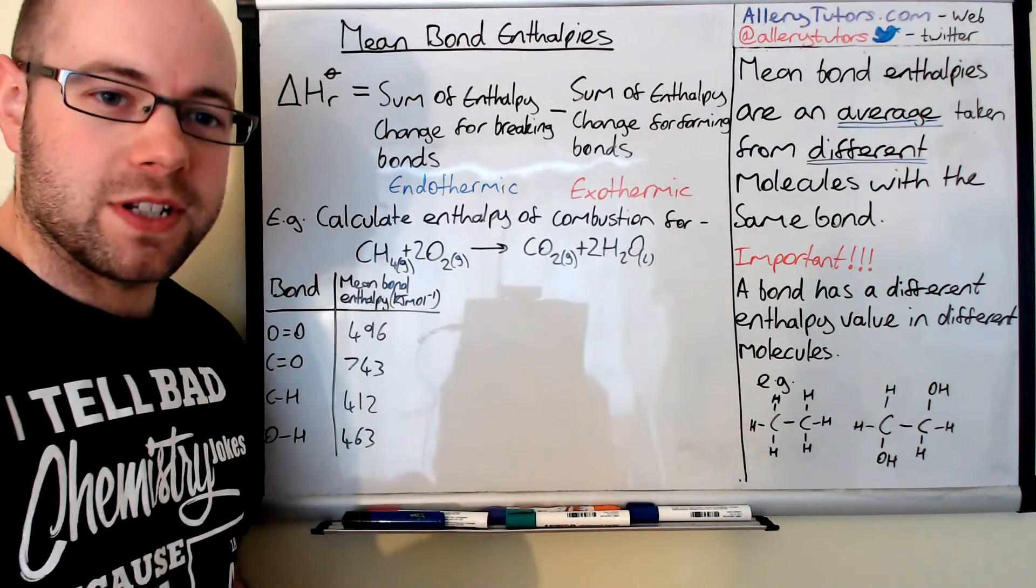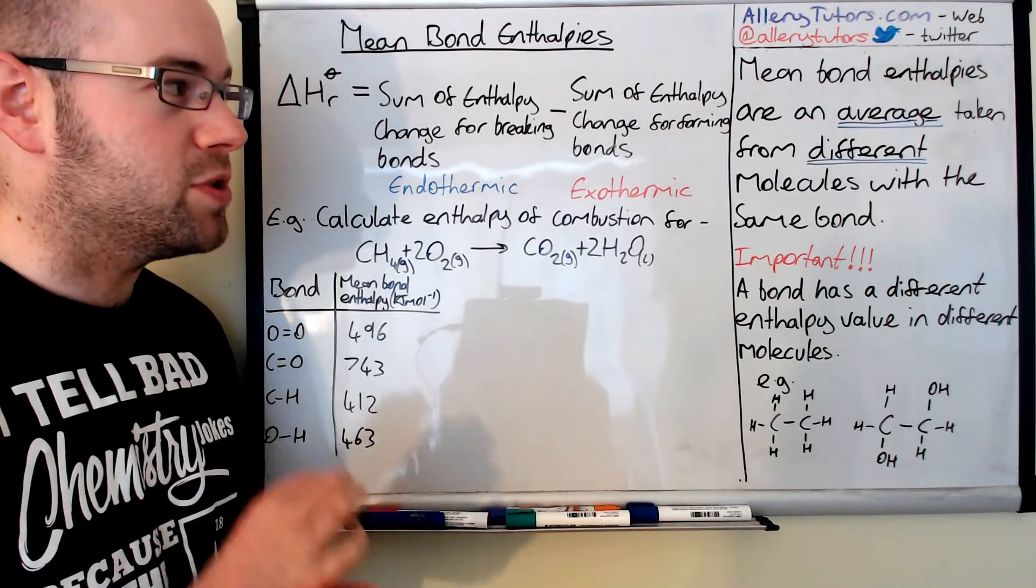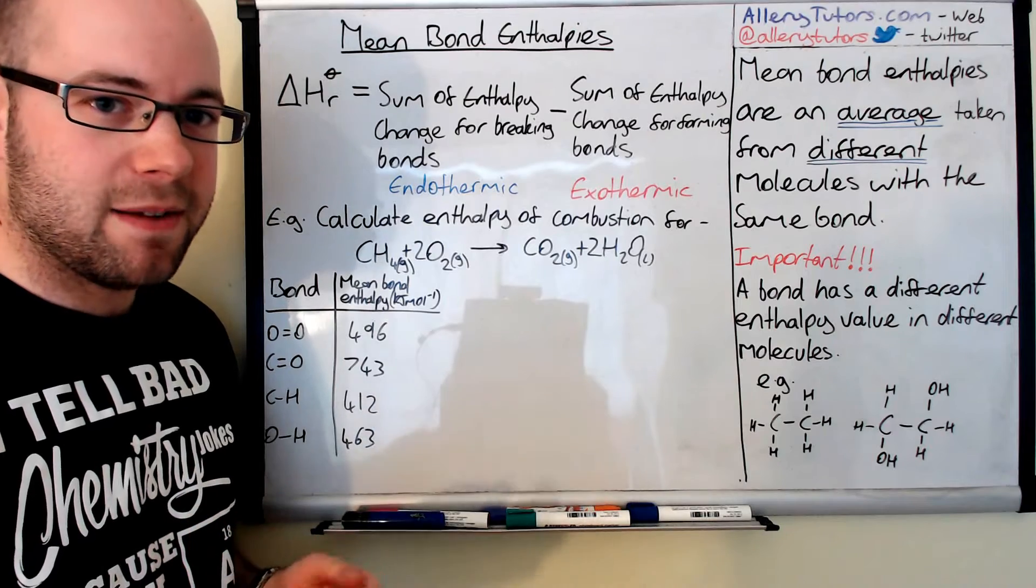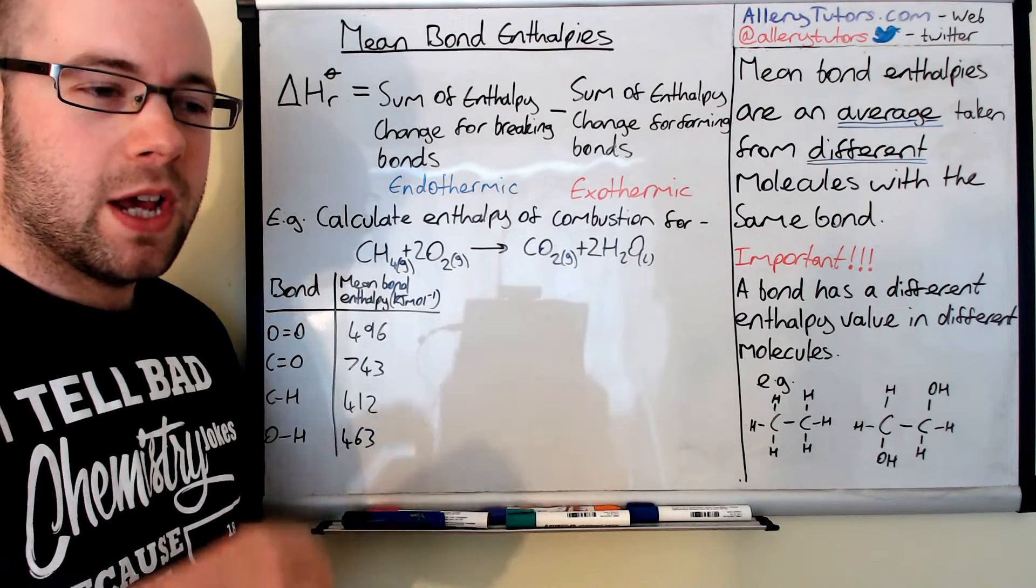I've got it written down here as a definition: a mean bond enthalpy is an average taken from different molecules of the same bond. We're talking about like a C-C bond or C-H bond or any type of covalent bond that's between two atoms.